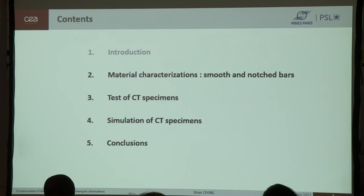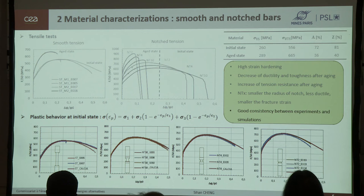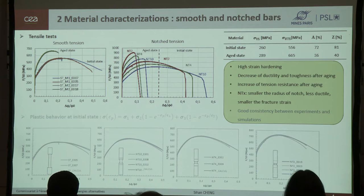In this page, I want to introduce the part of material characterization. Tensile test with smooth and notched specimens are carried out at initial and aged state. The first figure is the result of smooth tensile test, which are curves of engineer stress as a function of diameter reduction. We could see that this curve shows high work hardening for both initial and aged state. After aging, the maximum stress increase and the fracture strain decrease. That is to say the aging process reduce the ductility but increase the work hardening.